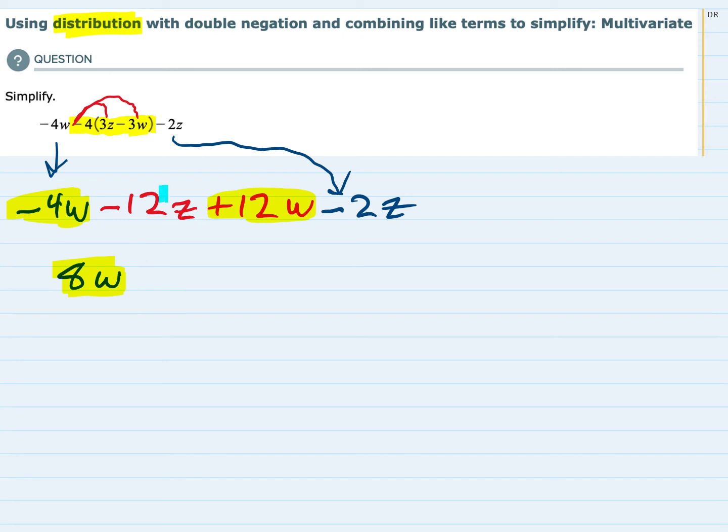But I also have these other like terms. I have a minus 12Z and I have a minus 2Z. Those are also like terms that can be combined.